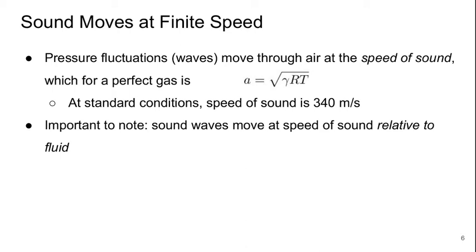Sound moves at a finite speed. These pressure fluctuations that we perceive as sound, which are waves, move through air at the speed of sound, which for a perfect gas is the square root of gamma — the specific heat ratio — times r, the specific gas constant, times the temperature. At standard atmospheric conditions that speed of sound is about 340 meters per second, so a sound wave moves about a kilometer in 3 seconds.